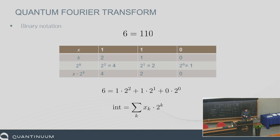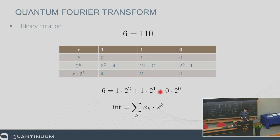In typical binary notation, x represents the bit value, k is the position, and 2^k is the value of that bit. So position 2 has bit value 4, position 1 has bit value 2, and position 0 has bit value 1. You get the integer value by summing x_k times 2^k. For example, the value 6 is 4 times 1 plus 2 times 1 plus 1 times 0.